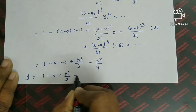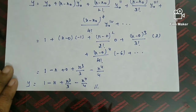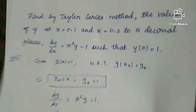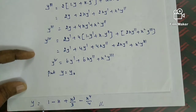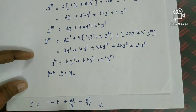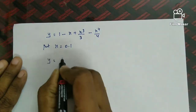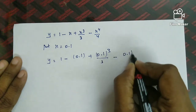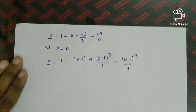This is the required solution of the given differential equation, expressed in powers of x. To find y at x equal to 0.1, substitute: y equals 1 minus 0.1 plus (0.1)³/3 minus (0.1)⁴/4. Using a calculator, the answer is 0.90030.